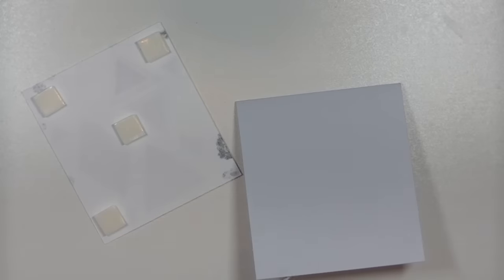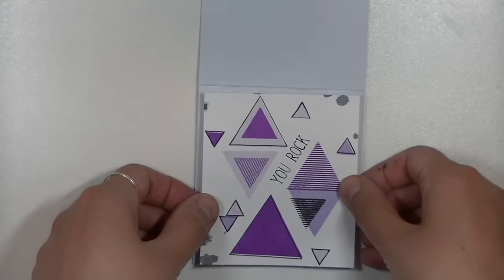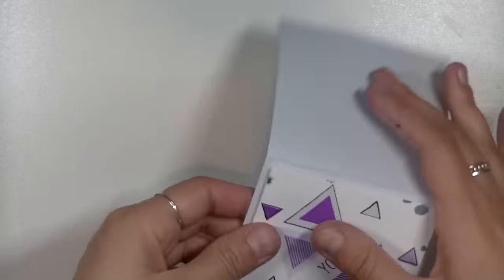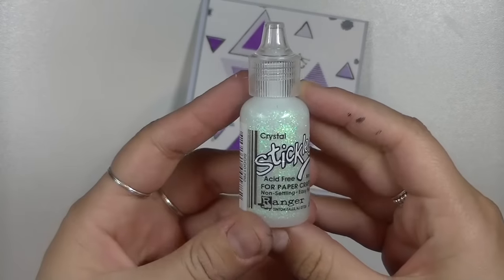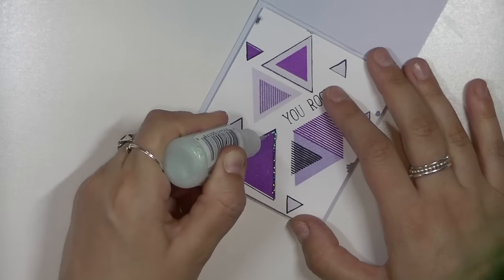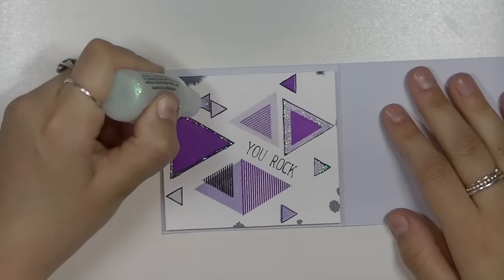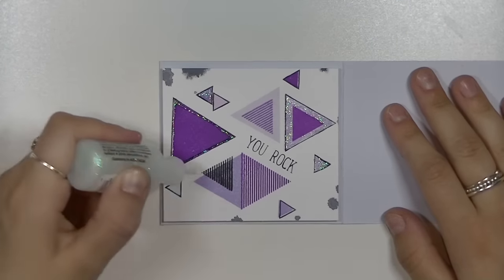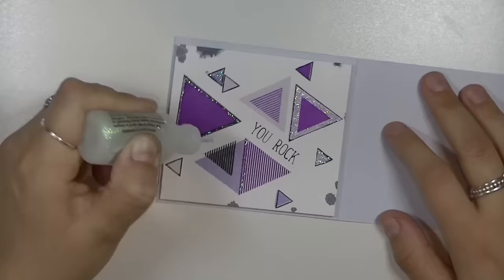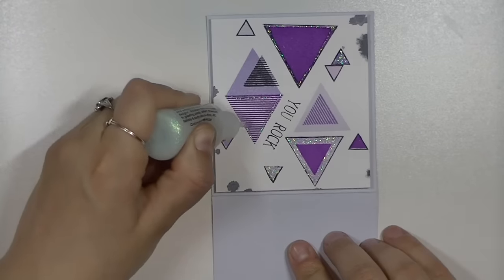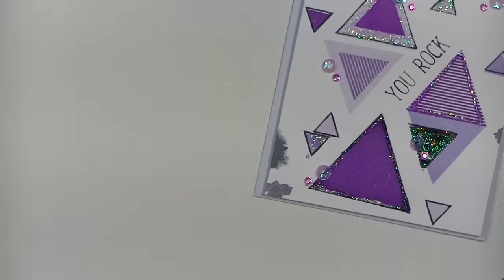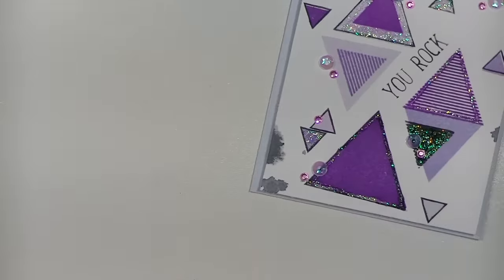Again using the Tombow 3D foam tabs to add a raised effect to this card. Now I'm using some crystal Stickles to further decorate the card. I really want it to sparkle and I just really wanted the purple to pop. And of course adding some more sequins and bling. I just couldn't resist.